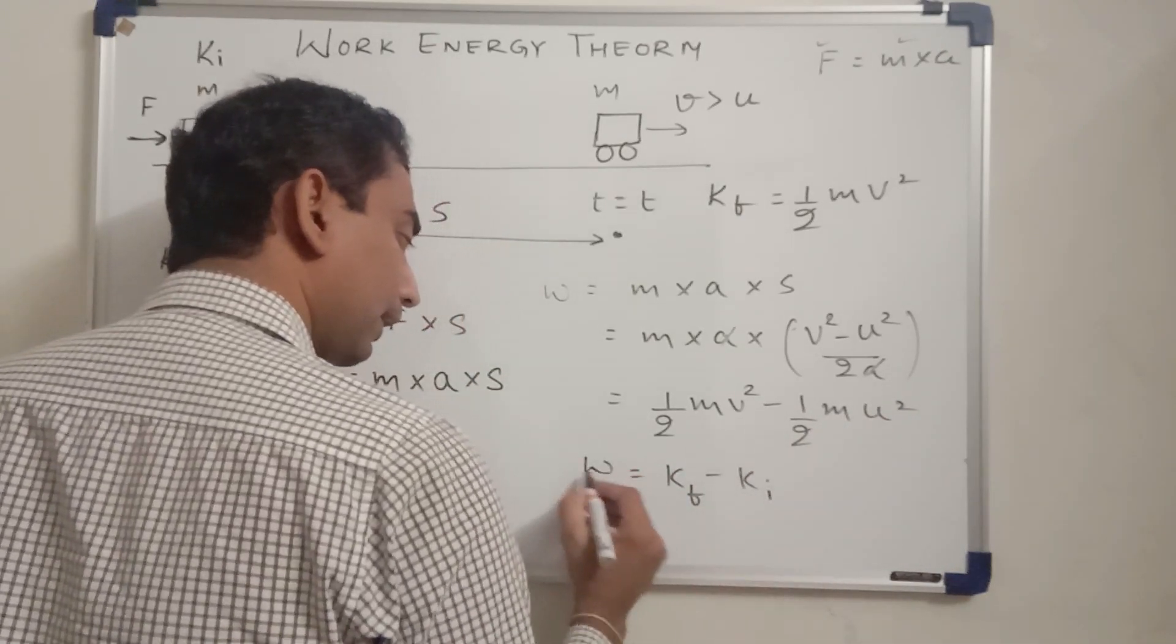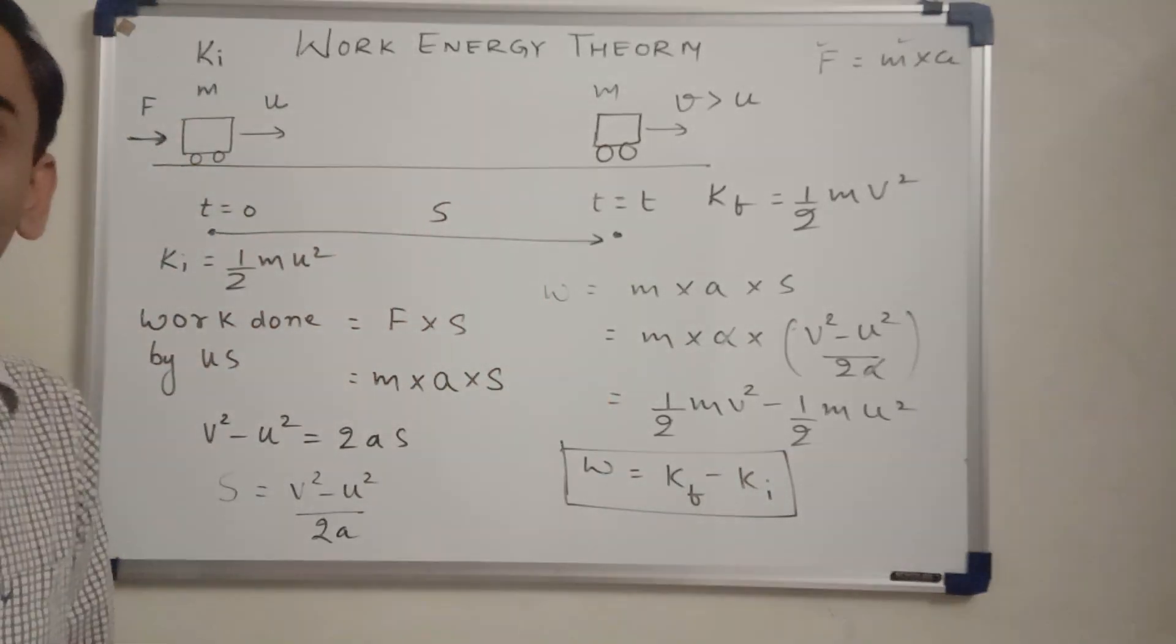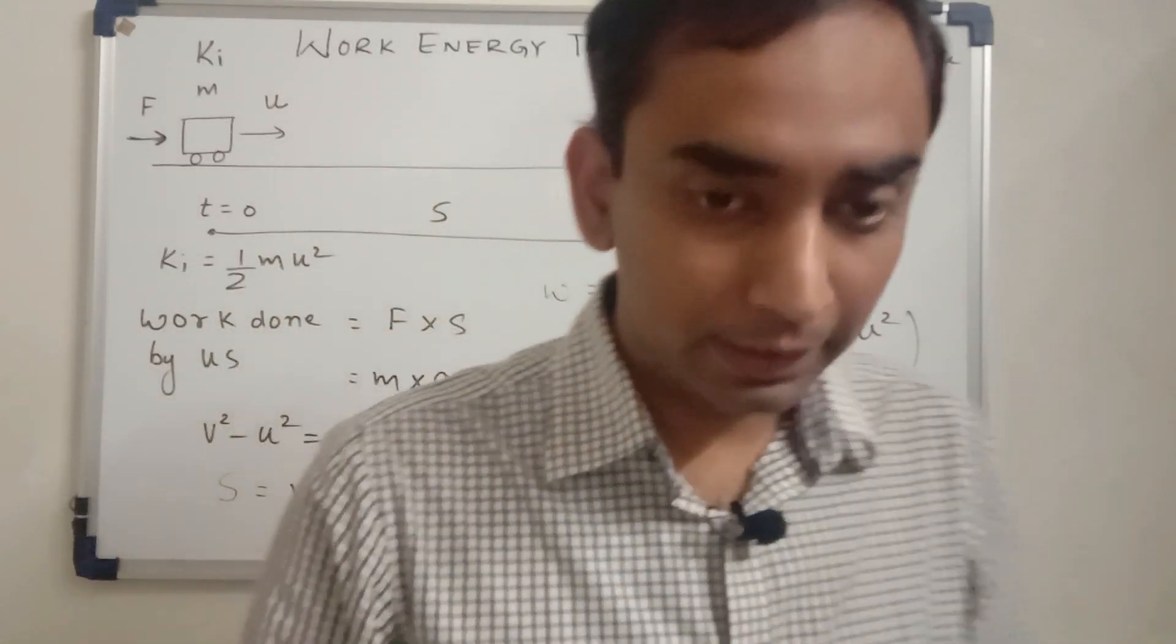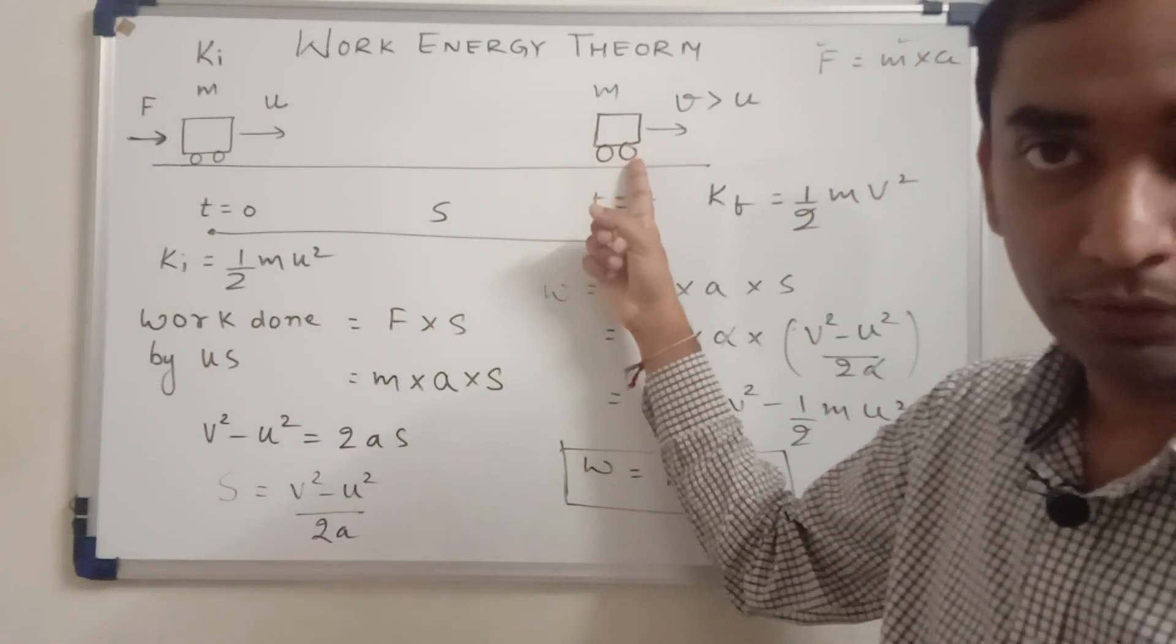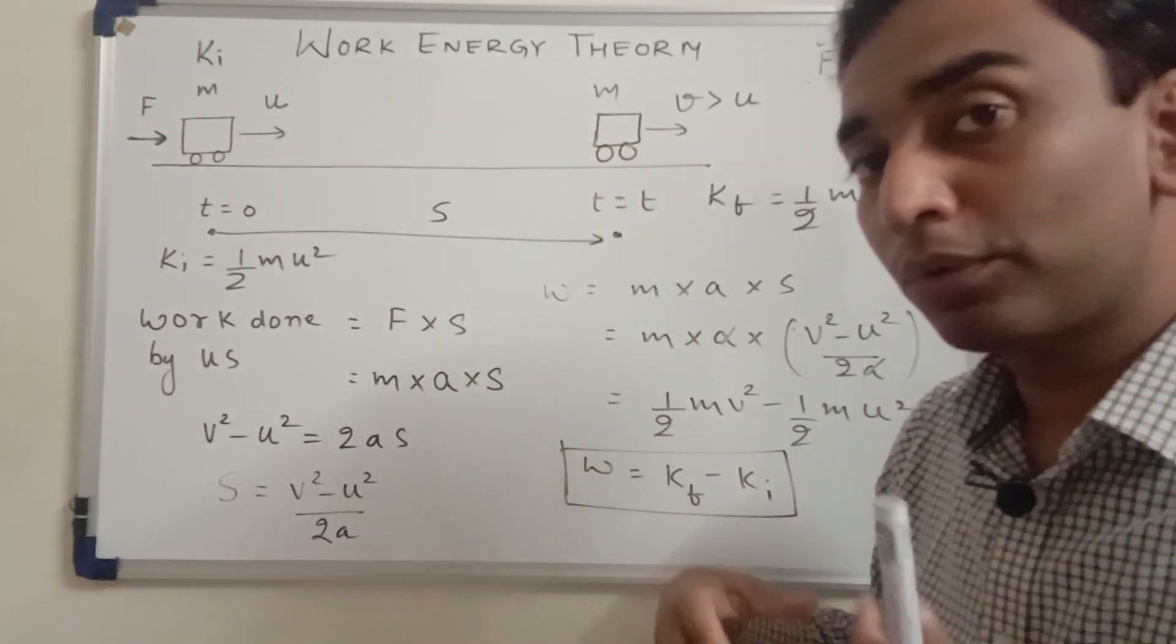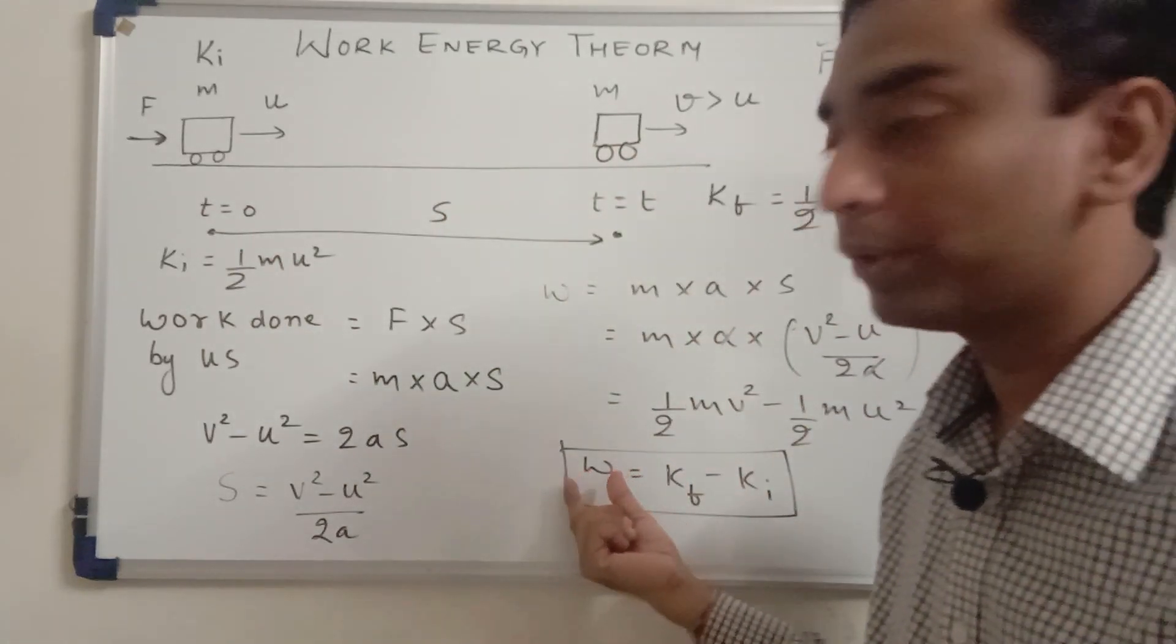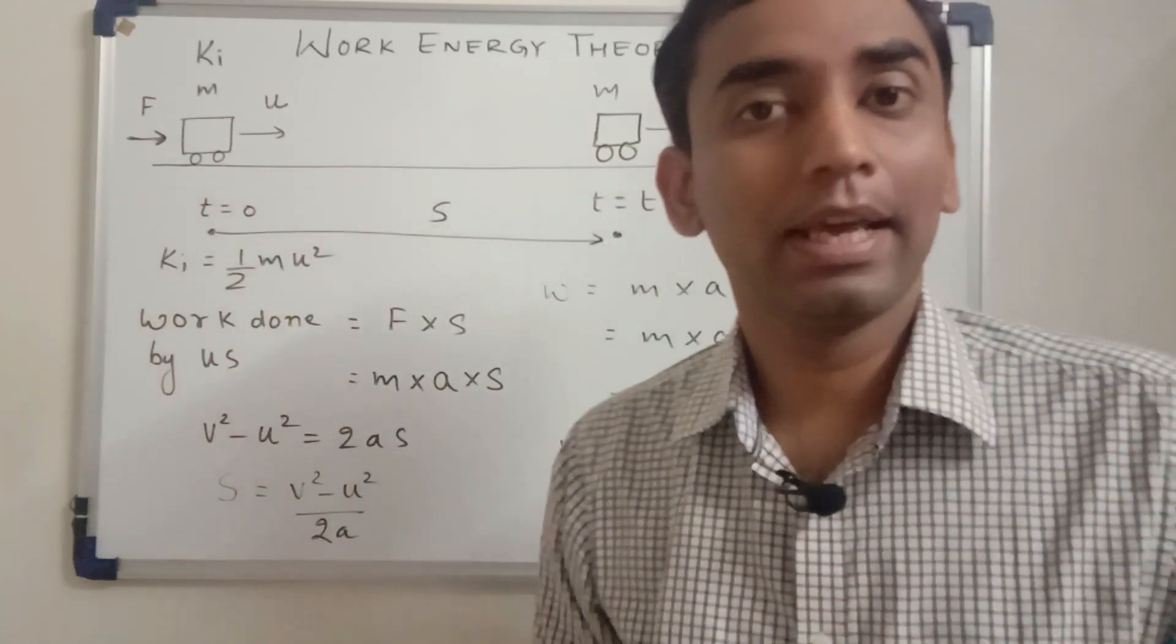This itself is called the work energy theorem. So what does it essentially mean? The increase in the kinetic energy of the body is the result of the work done. An increase in the kinetic energy is exactly equal to the work done by us. In this situation we have not considered any kind of frictional forces over here. That's why this is valid.